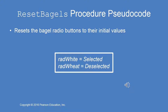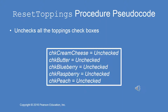The default radio button for bagels is white. Reset bagels resets the bagel radio button to the default or initial values, which is rad white selected and rad wheat deselected. The reset toppings procedure unchecks all of the topping check boxes — check cream cheese, check butter, check blueberry, check raspberry, and check peach all get assigned the value unchecked.